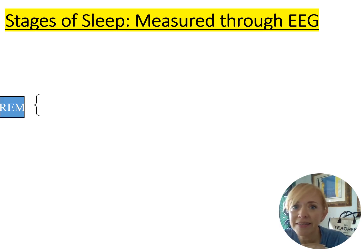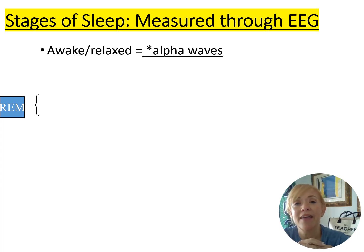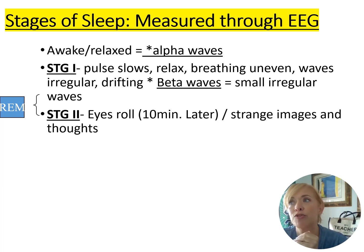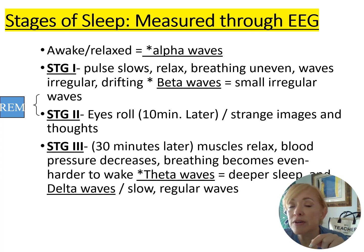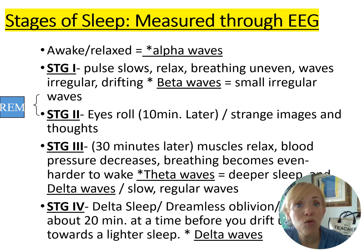The sleep stage brain wave pattern goes: alpha, beta, theta, delta — then back up again. Delta sleep is the most important to know — called 'dreamless oblivion,' it's the stage where your brain is slowest. Delta decreases throughout the night while REM increases, meaning the longest and most vivid dream you'll have is the one right before you wake up.